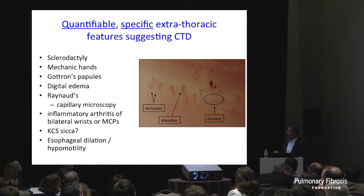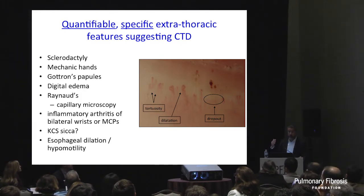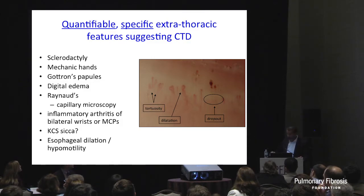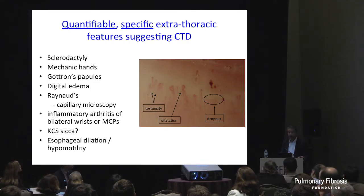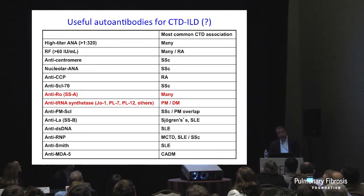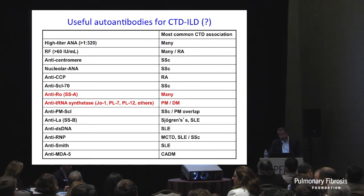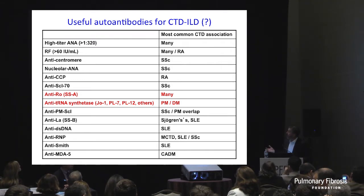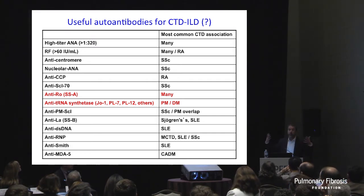Specific physical exam findings: sclerodactyly, mechanic hands — that distal fissuring makes you think scleroderma or myositis spectrum. Gottron's papules — that erythematous rash over the knuckles makes you think myositis. Puffy hands, Raynaud's phenomenon. Get your rheumatologist to teach you nail fold capillaroscopy — it's actually fairly easy. A classic scleroderma nail fold shows dropout and tortuosity. Inflammatory arthritis, sicca symptoms. A dilated patulous esophagus may also be a suspicious finding. Autoantibodies aren't perfect and generate more questions than answers, but they can be helpful and may open the window to engaging rheumatology.